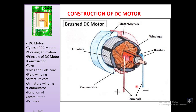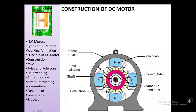The construction of a DC motor includes terminals connected to brushes, which connect to the armature, commutator, armature windings, field winding, and stator magnets. Looking at the front view, the shaft carries the commutator on the armature. The poles and pole shoes are visible, with field winding on the poles. The outermost part is known as the yoke or frame.